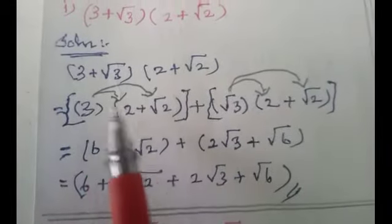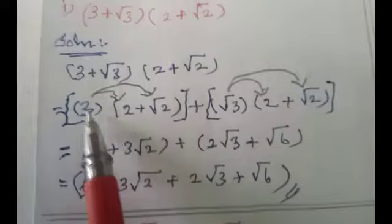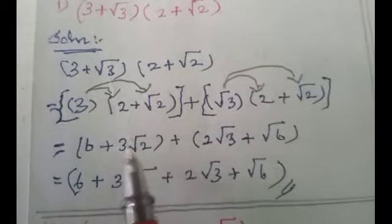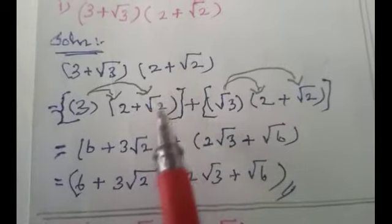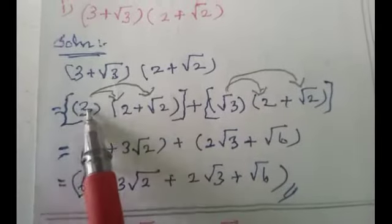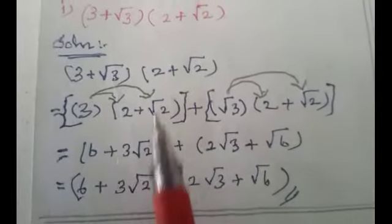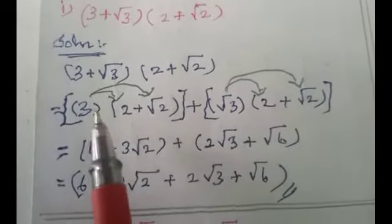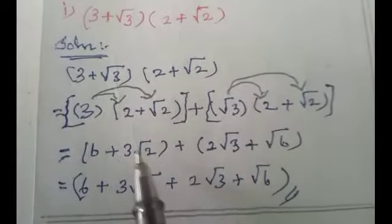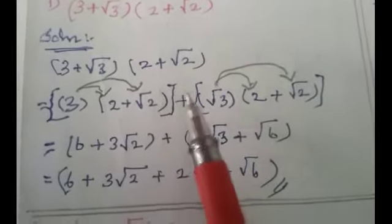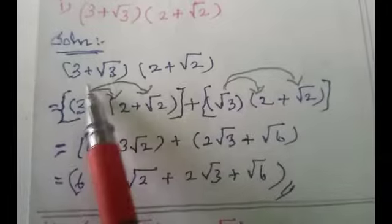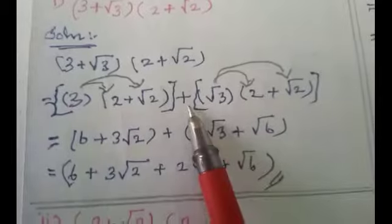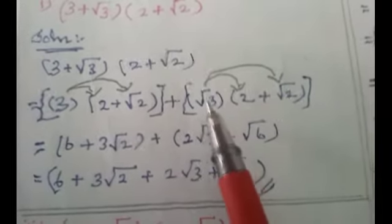Now multiply 3 with both terms: 3 × 2 = 6, and 3 × √2 = 3√2, because when a non-root number multiplies a root number, the result is written as a times root b, so a × √b = a√b. The plus symbol carries over as is — if it were minus, you would write minus.